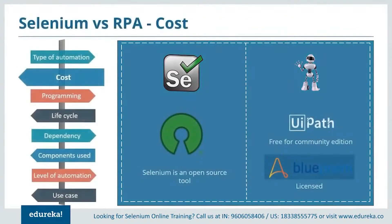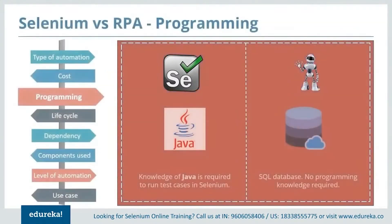Talking about cost: Selenium is an open source tool used to automate web applications. RPA has a set of tools like UiPath, Automation Anywhere, and Blue Prism. UiPath is free for community edition and advanced versions are licensed. Automation Anywhere gives you a free trial for a month and advanced versions are licensed as well. Blue Prism is completely licensed. Regarding programming knowledge: Selenium requires knowledge of Java to run test cases, whereas RPA does not require any coding knowledge as it deals with back-end processes and database operations.